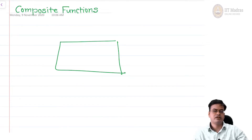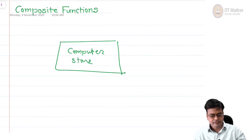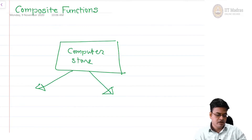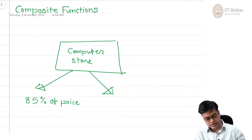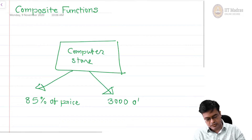It is known that you are a very good bargainer and your friend wants to buy a computer, so your friend takes you to a computer store. In this computer store, there are two offers available. All items are on sale. One offer is you will get 85 percent of the price. Whatever you buy, you will get the product at 85 percent of the price, and the other offer is you will get a flat 3000 off on the MRP — the maximum retail price.